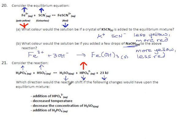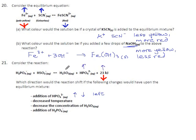Decreased temperature: if you took this container and put it in a freezer, you're pulling out heat. You can treat heat just like a chemical species — we're taking it away, so what does the system do? It tries to replace it. The right side goes down and the left side goes up, meaning the reaction will go to the right to try to get equilibrium back.